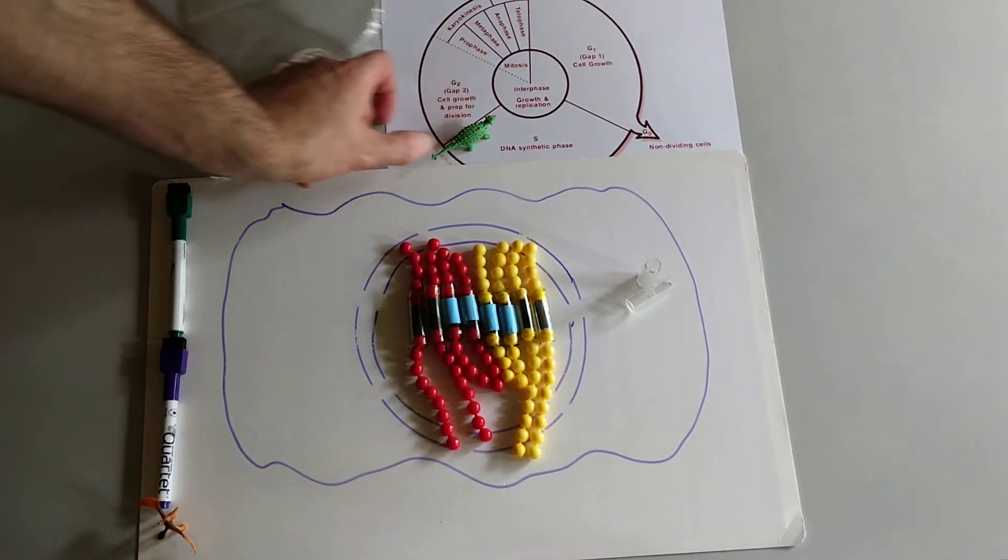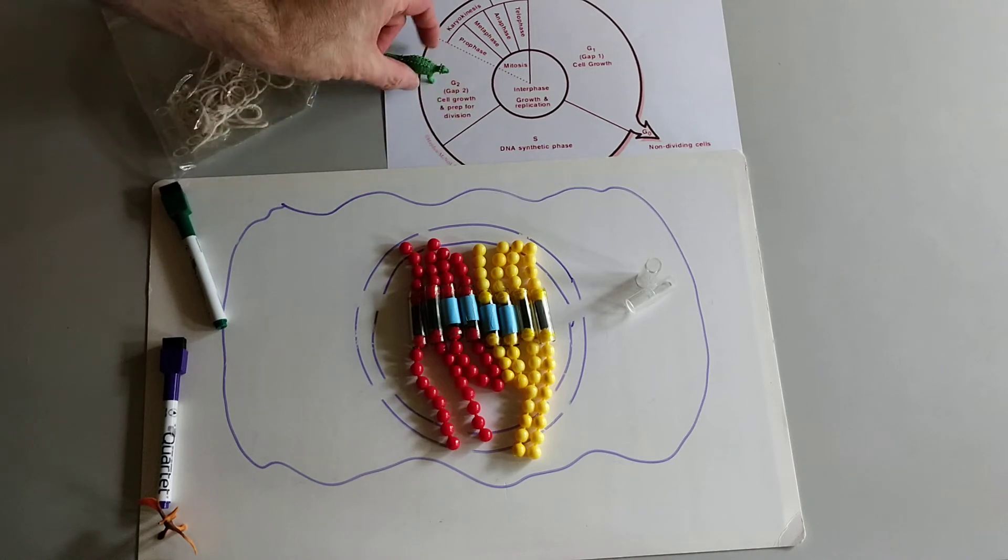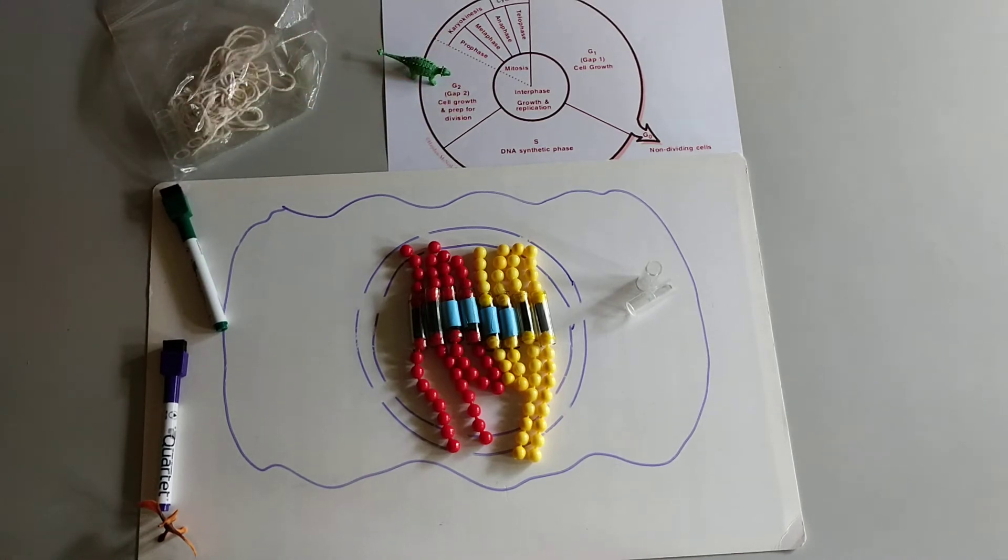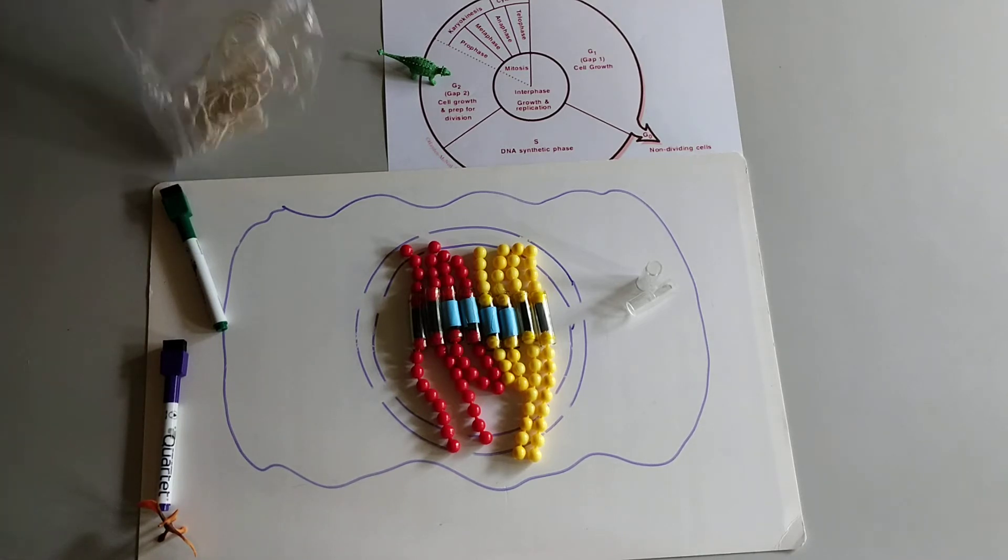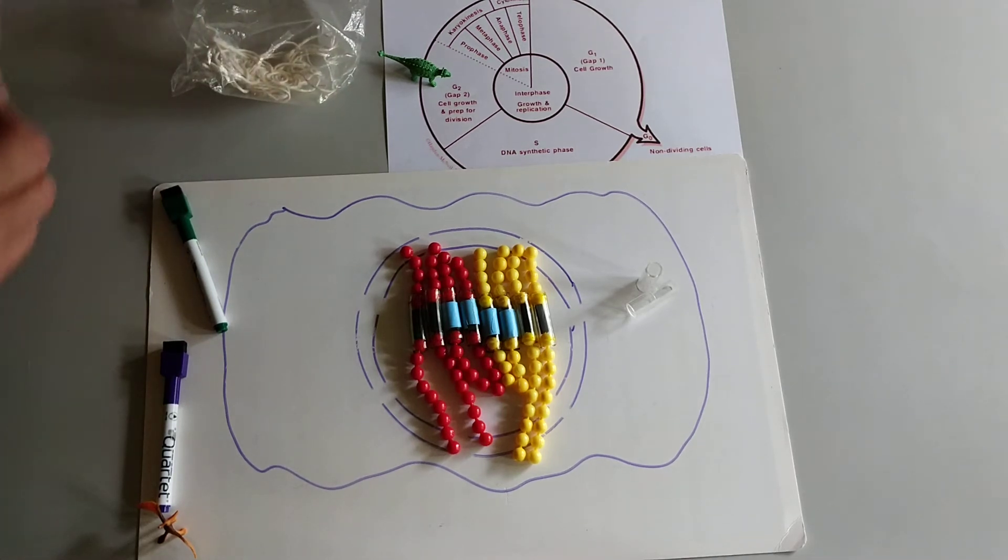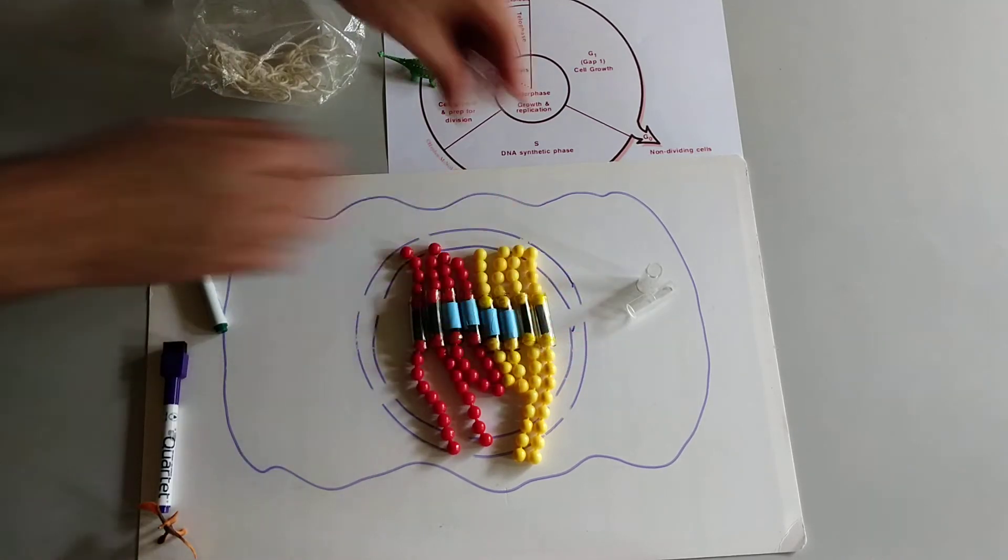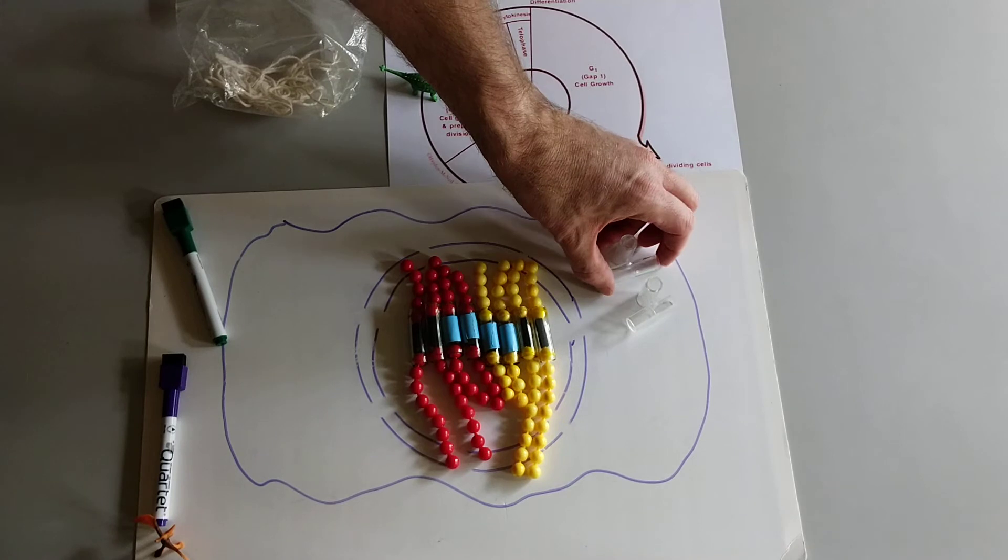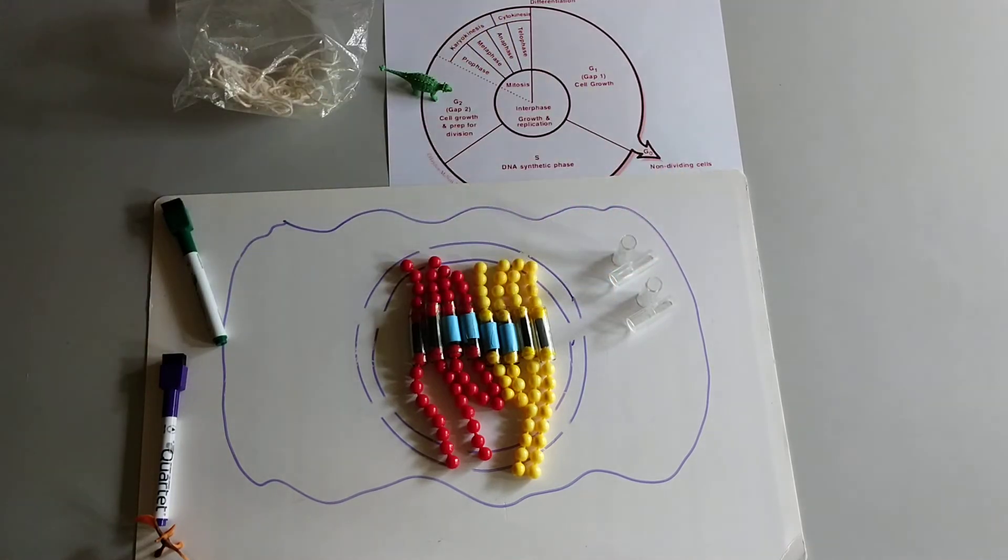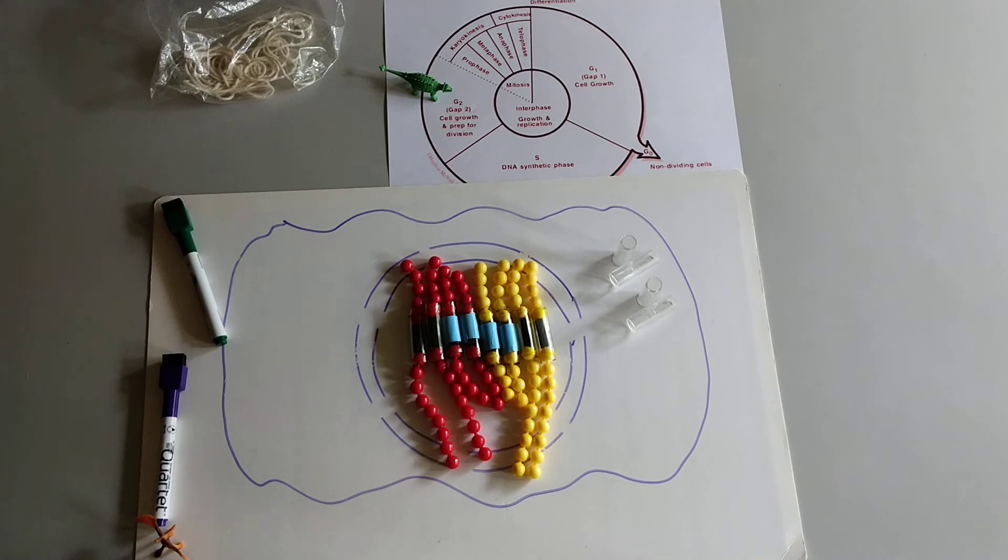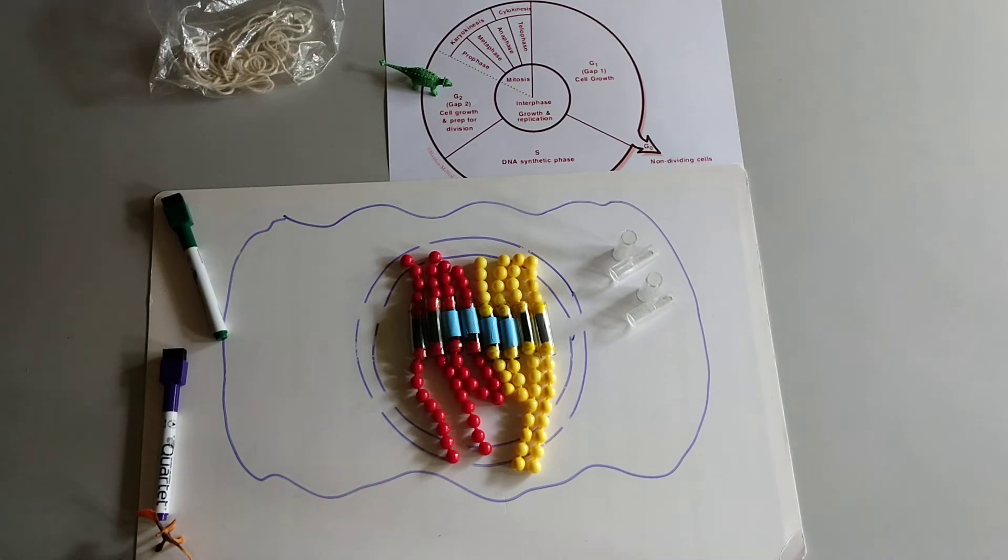Okay, so now we are going to get into G2. The second gap phase of interphase where it doesn't seem like much is happening. But actually the cell is getting ready for mitosis. So it's starting to stockpile all the materials it needs. The centrosome replicates. So another pair of centrioles is produced. And now the cell is ready to go through mitosis.